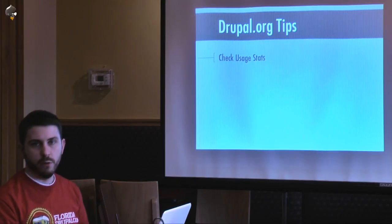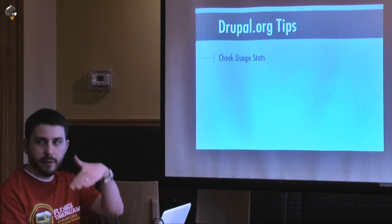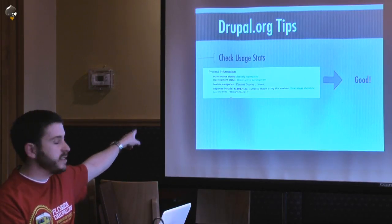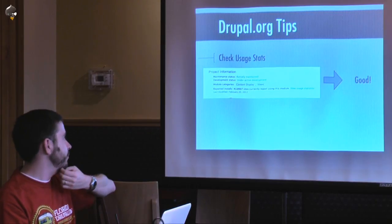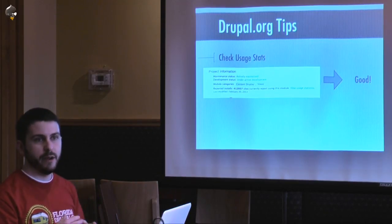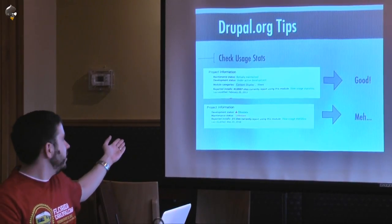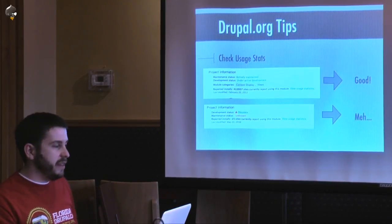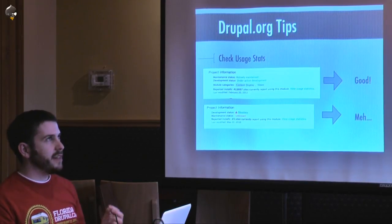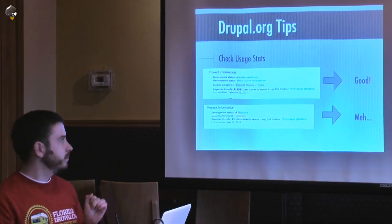Some tips for using Drupal.org when building your site. If you're trying to find a module and you're not sure what to use, always check the usage statistics. Each module at the bottom of the page has statistics on how many sites use it. Something like Views has 412,937 sites using it — that's the highest of all modules. You want something with a high number like that, because it means other people are using it, it's been tested, put through the ringer, and will do most of what you want.